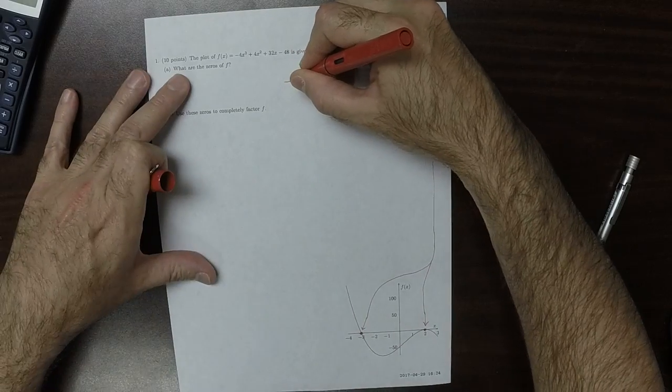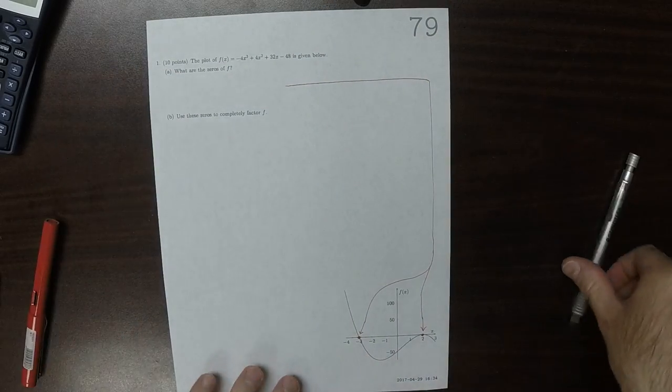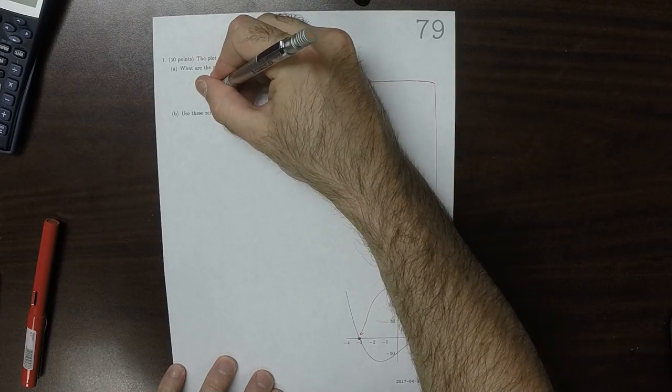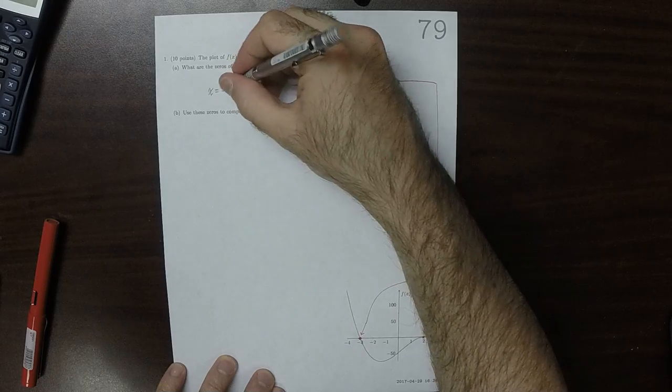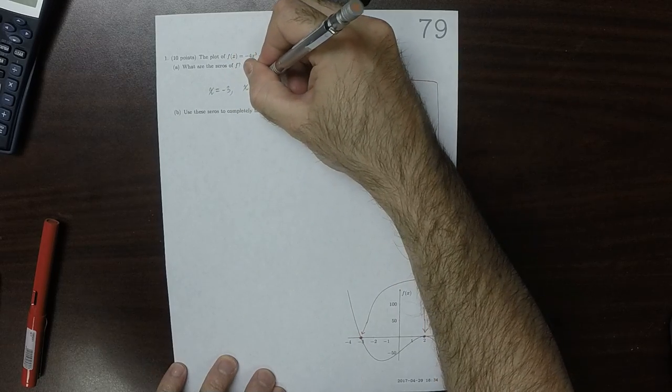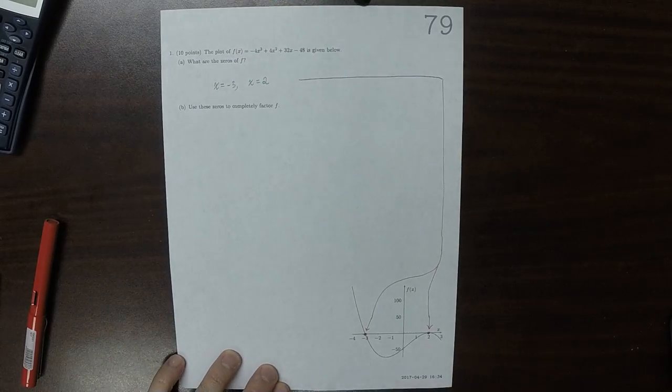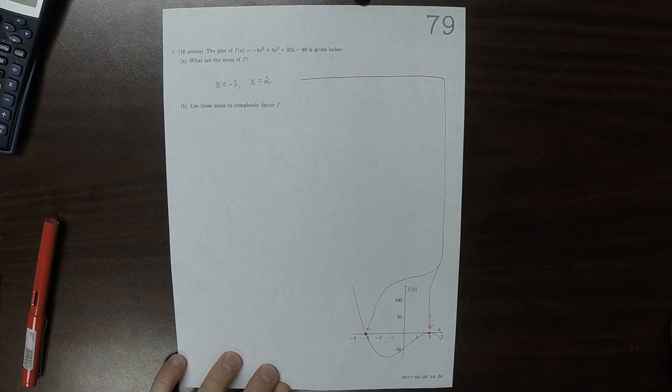So the zeros are x = -3 and x = 2, and now we'll use those zeros.